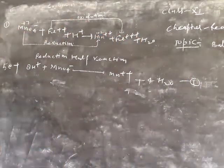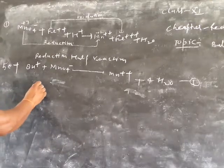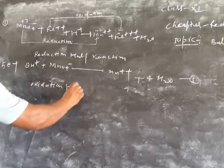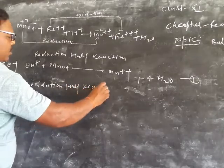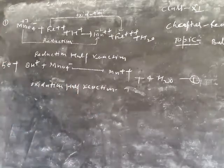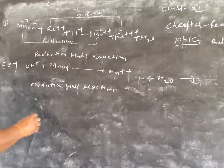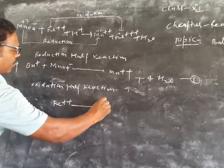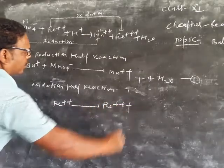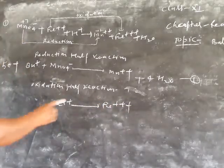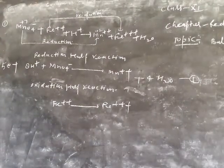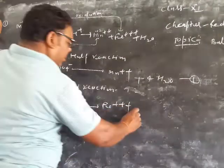Second, oxidation half reaction. Fe2+ goes to Fe3+. Fe atoms are already balanced at 1. Oxygen atoms balanced, hydrogen atoms balanced. Balance the charge by adding 1 electron.